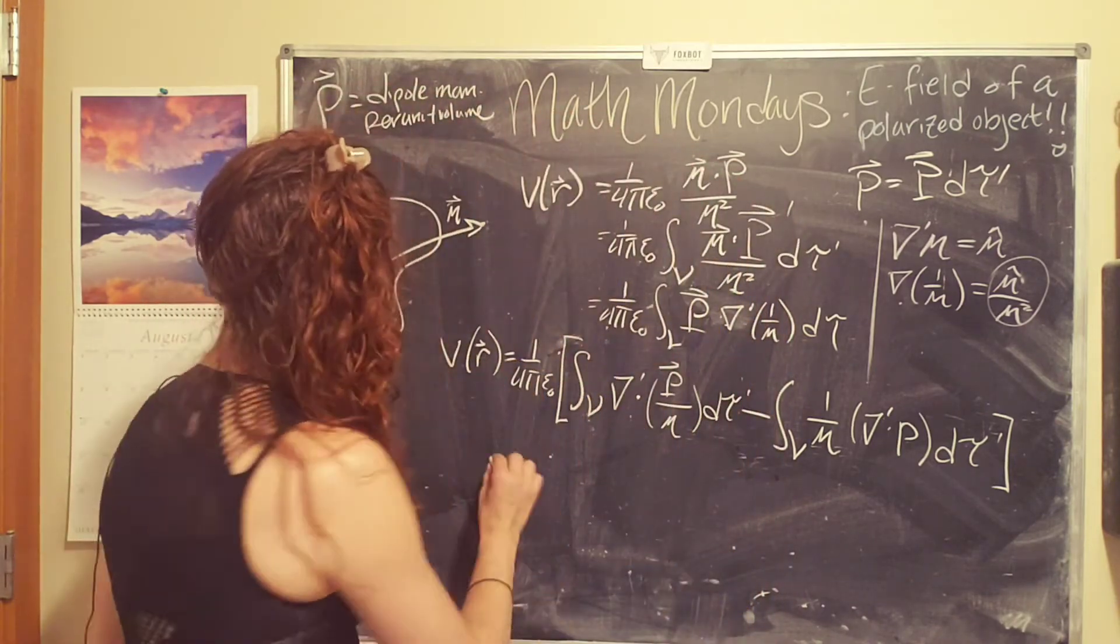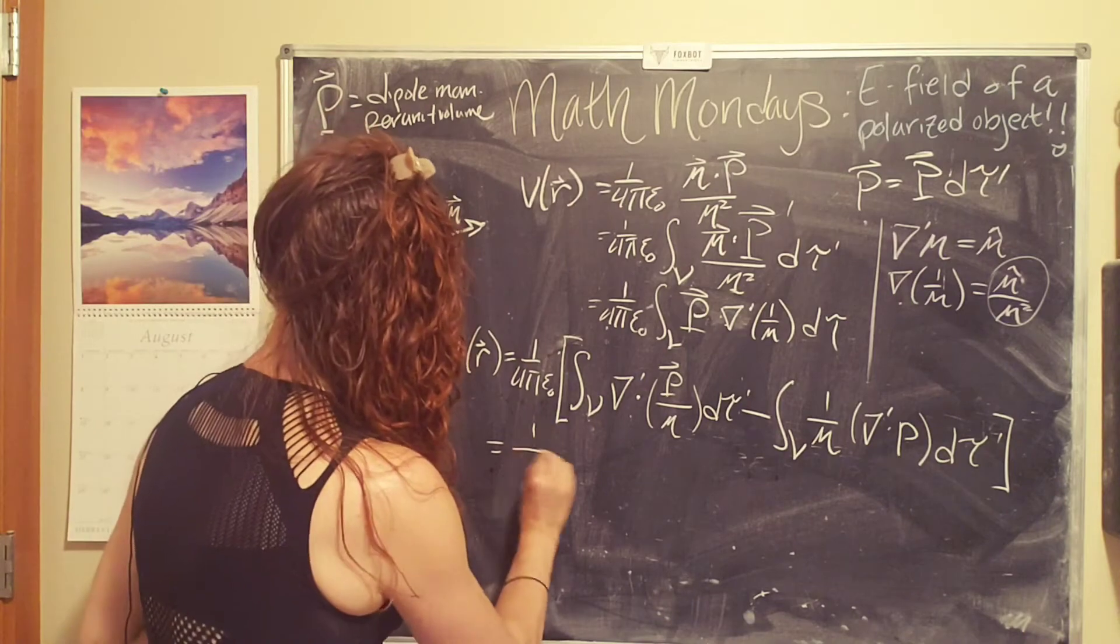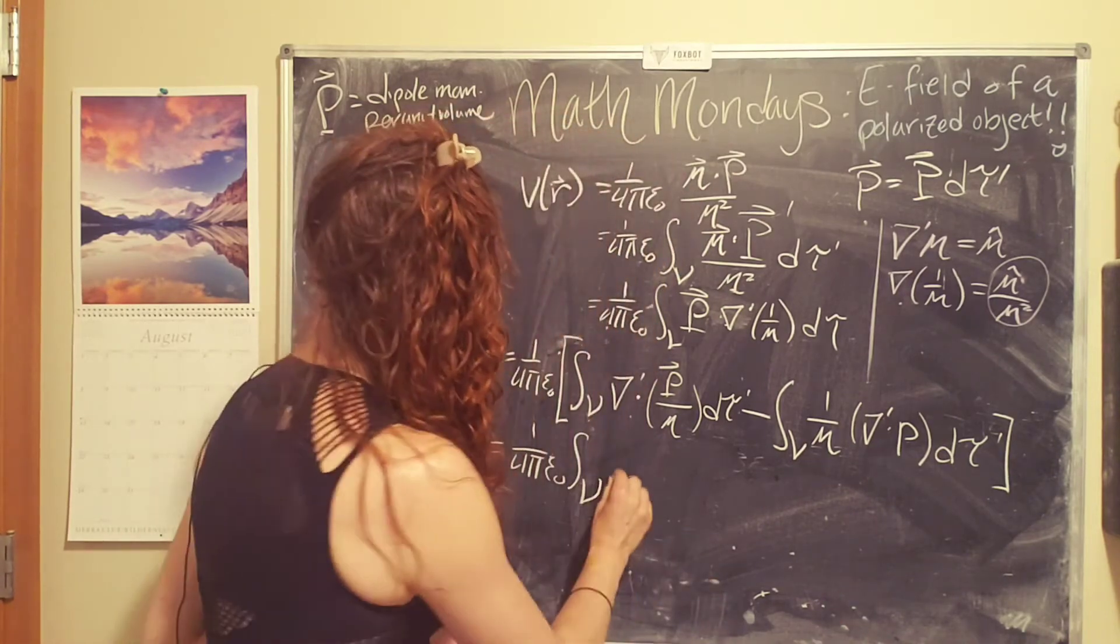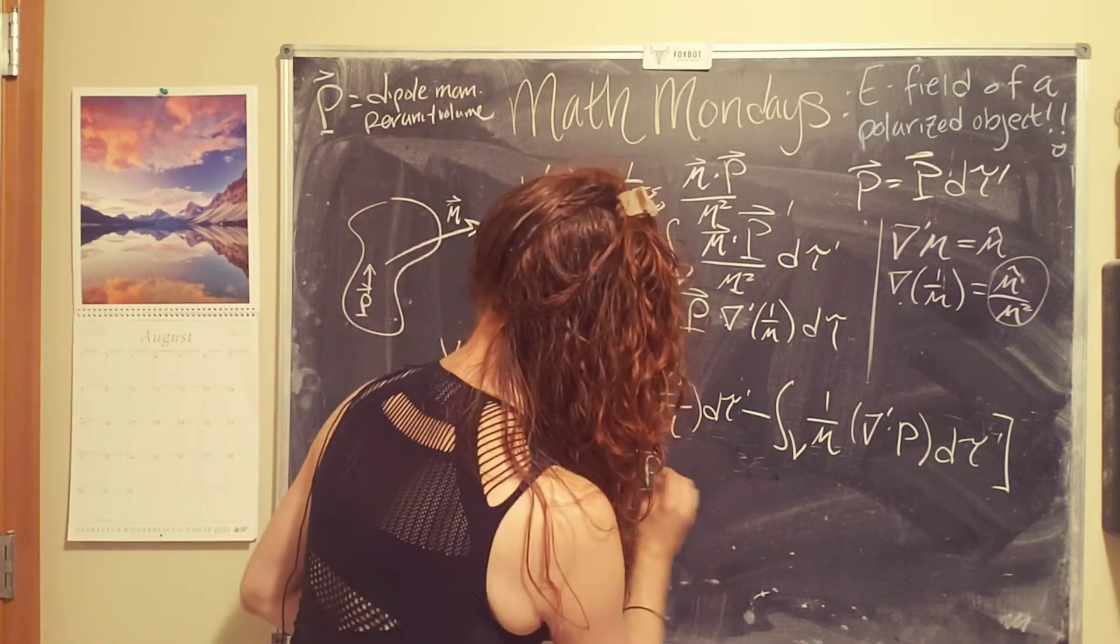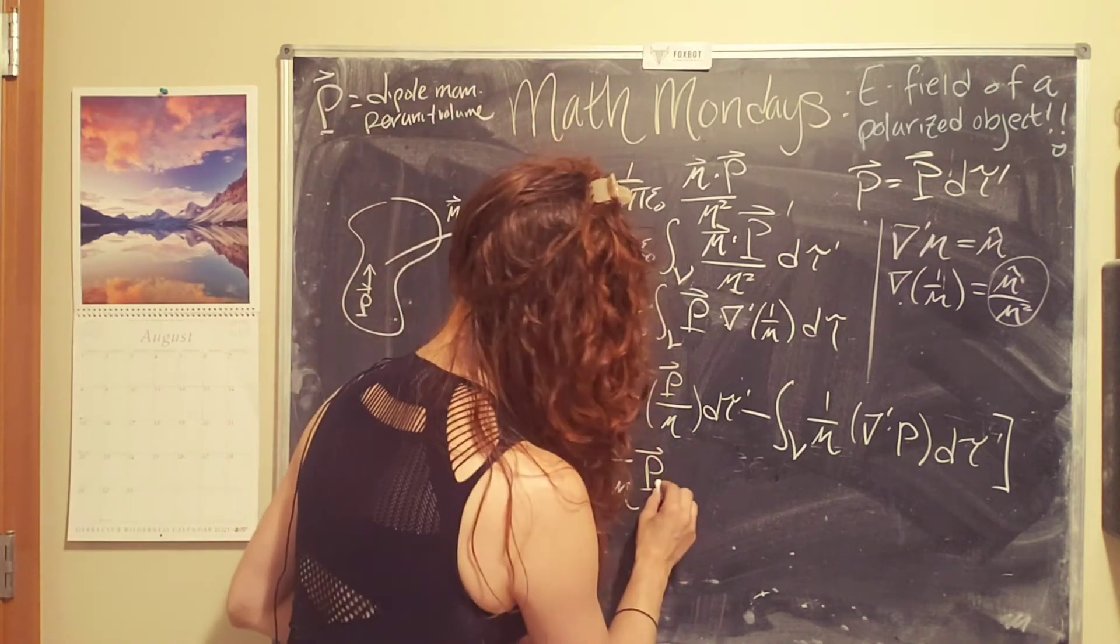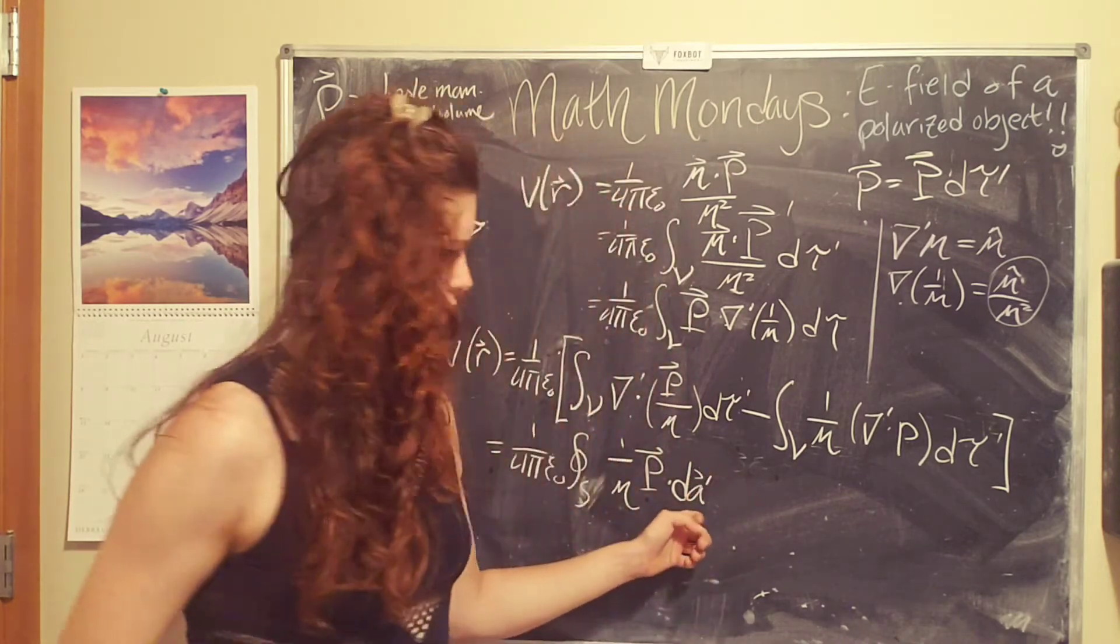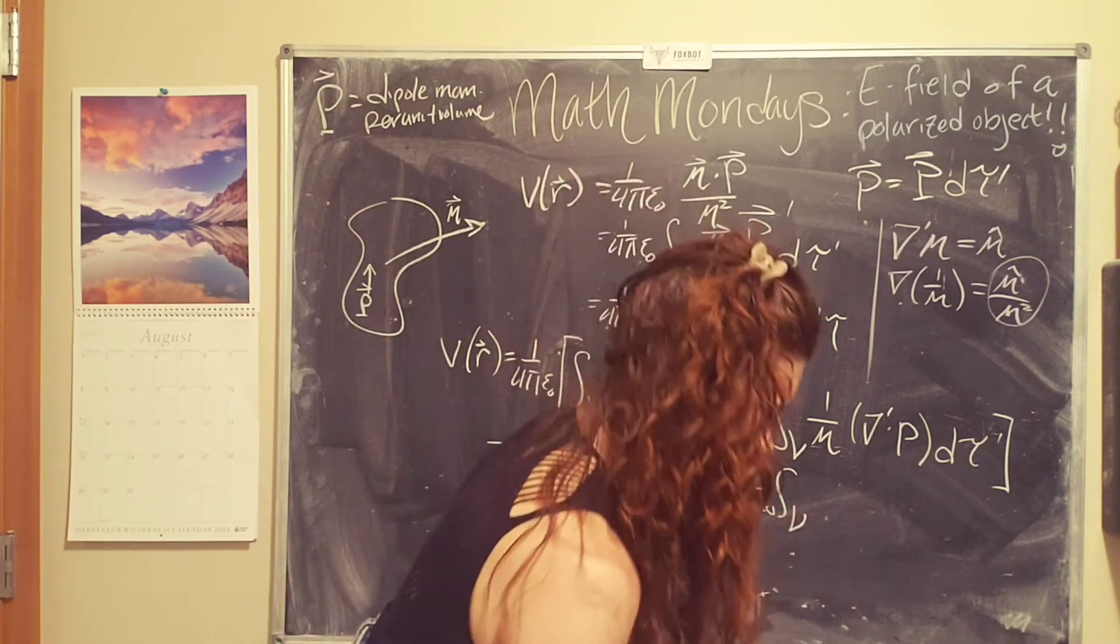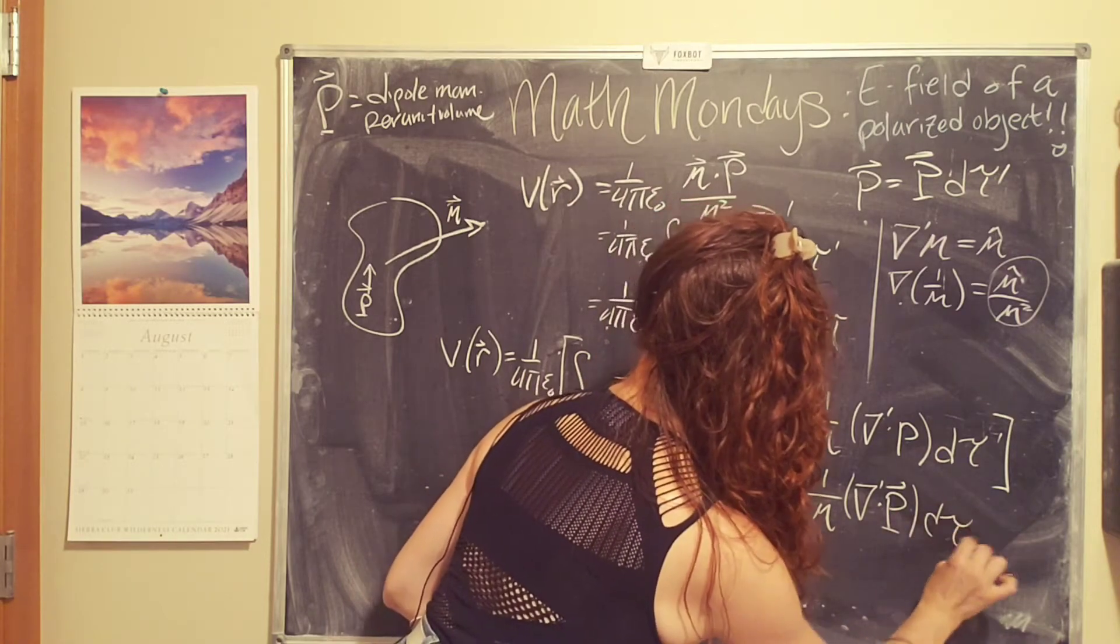So then we use the divergence theorem to simplify this further. I'm actually going to distribute this term. So 1 over 4 pi epsilon naught integral over the volume. This first term simplifies, using the divergence theorem to the polarization. This turns into a surface integral. So polarization dot dA prime, that's a vector, minus 1 over 4 pi epsilon naught. This one doesn't really do anything. Del prime dot the polarization vector d tau prime.